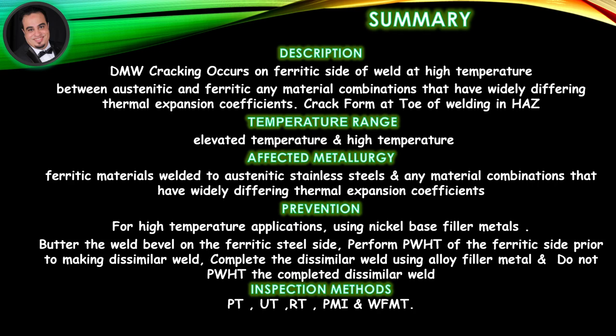Affected metallurgy: ferritic materials welded to austenitic stainless steels, and any material combinations that have widely differing thermal expansion coefficients. Prevention: for high-temperature applications, use nickel-based filler metals; butter the weld bevel on the ferritic steel side and perform PWHT of the ferritic side prior to making the dissimilar weld; complete the dissimilar weld using alloy filler metal and do not PWHT the completed dissimilar weld. Inspection methods: PT, UT, RT, PMI, and WFMT.